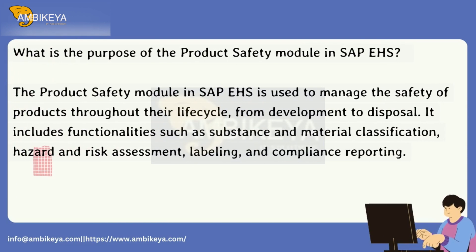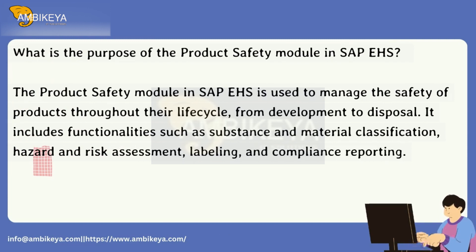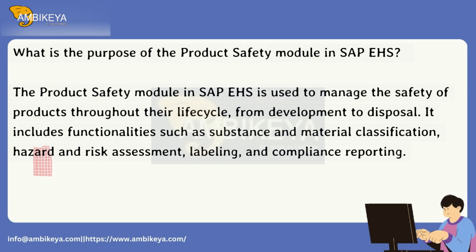What is the purpose of the product safety module in SAP EHS? The product safety module in SAP EHS is used to manage the safety of products throughout their life cycle, from development to disposal. It includes functionalities such as substance and material classification, hazard and risk assessment, labeling, and compliance reporting.